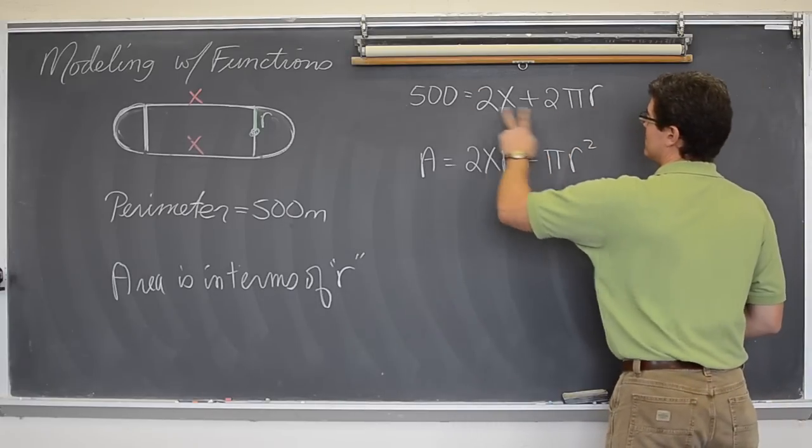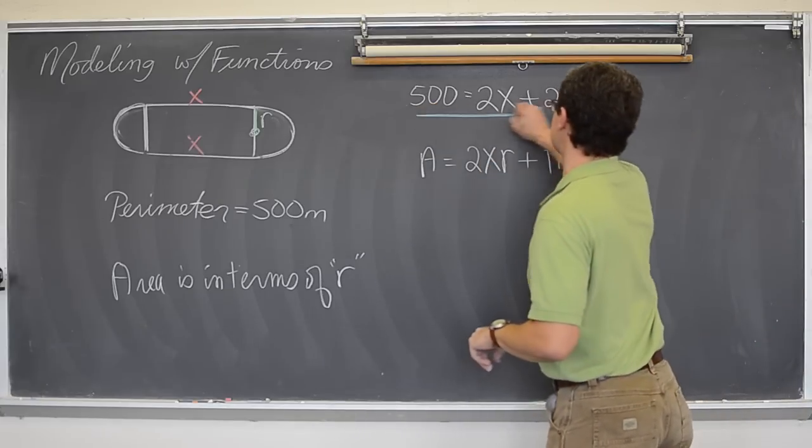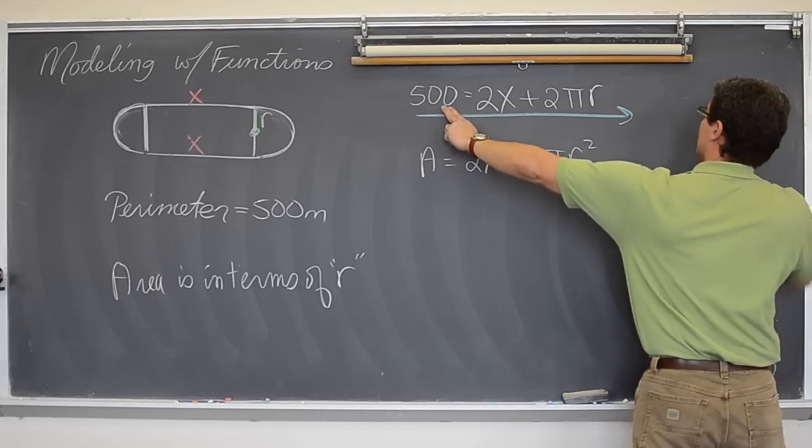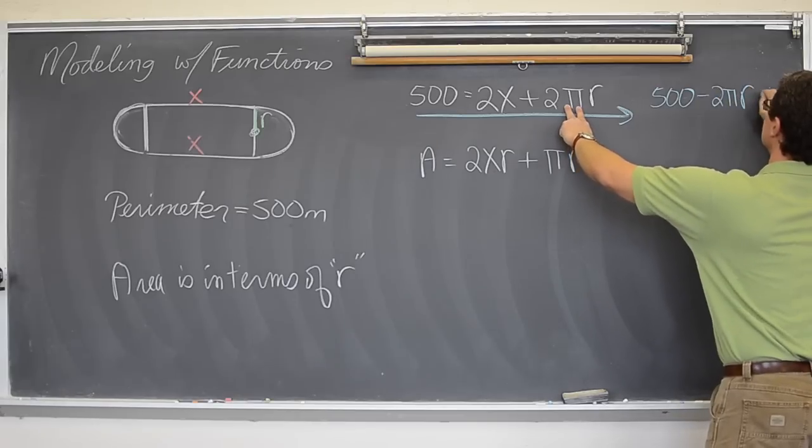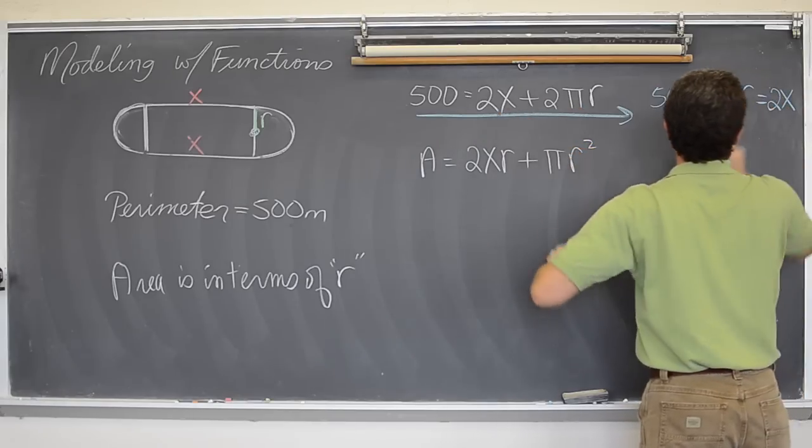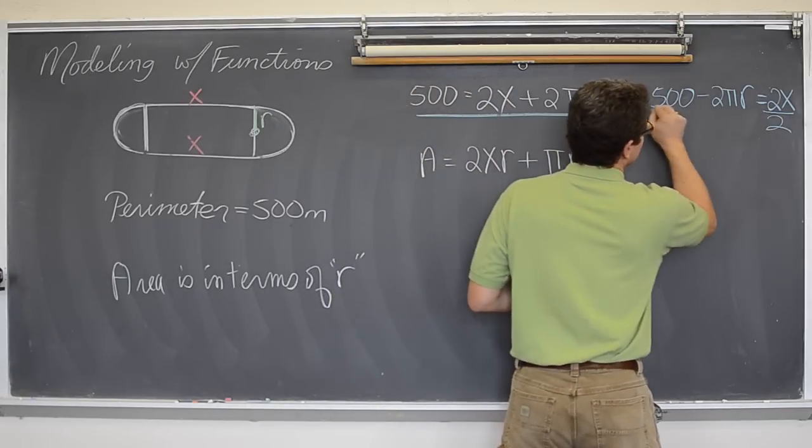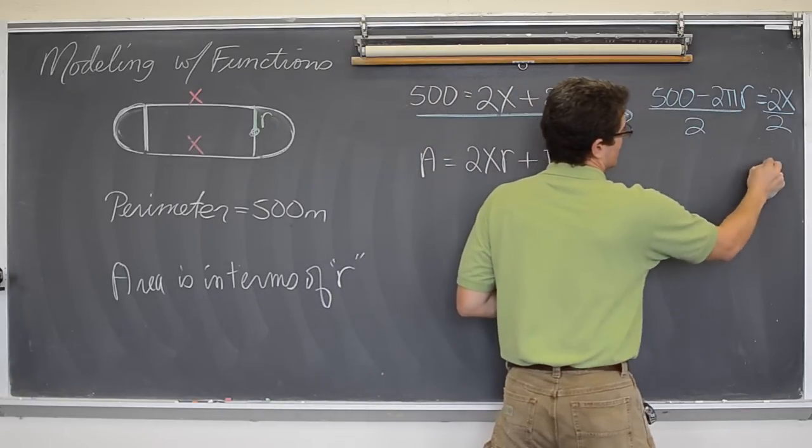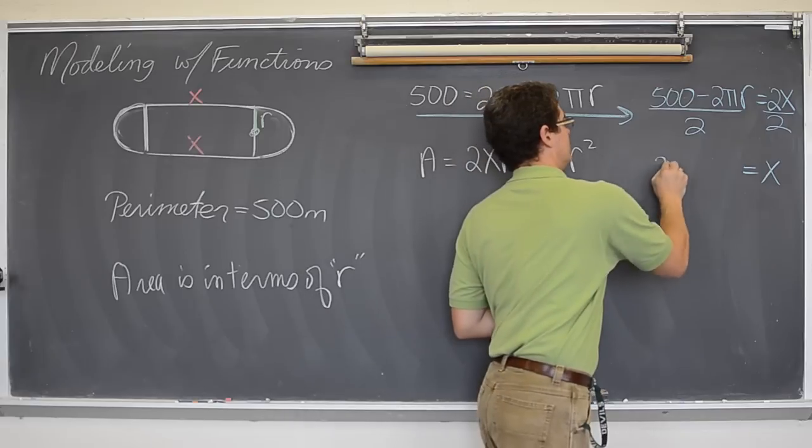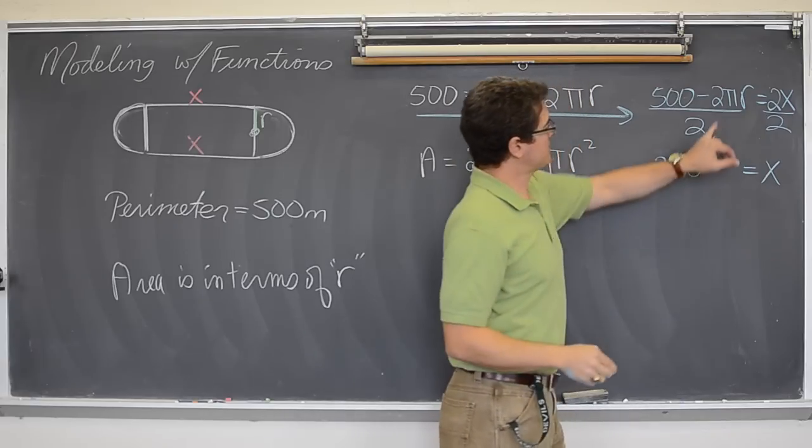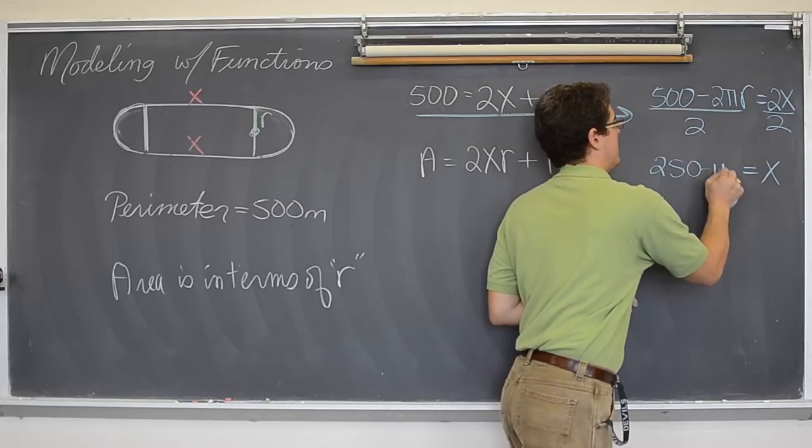That means we are going to move the 2πr over with subtraction. So we are going to have 500 minus 2πr equals 2x. And again, I want to solve for x. I am going to divide everything by 2. I am not going to be quite as thorough with showing the cancellation here because I just did a minute ago. So, 500 divided by 2 is 250. And 2πr divided by 2, or 2 divided by 2 is 1. So, minus πr.